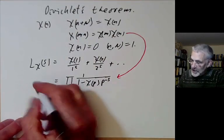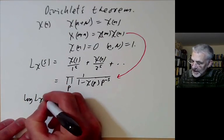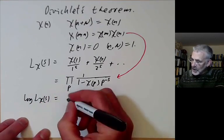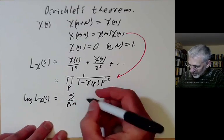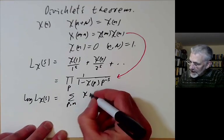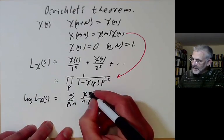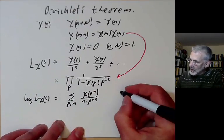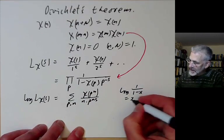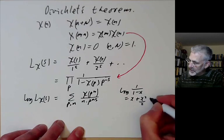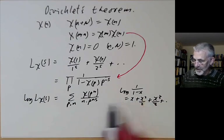We're going to be using not so much this L-series as its logarithm. So we take the logarithm of L(chi, s), and we can write this as a sum over all p and n of chi(p^n) / (n × p^{ns}). The reason for this is that we can write the logarithm of 1/(1 - x) as x + x²/2 + x³/3 + ..., the usual power series for logarithms.